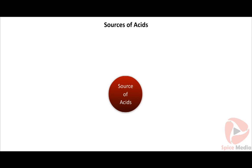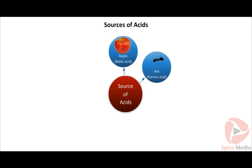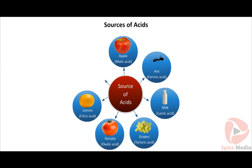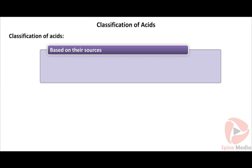The sources of acids are: apple contains malic acid, ant contains formic acid, milk contains lactic acid, grape contains tartaric acid, tomato contains oxalic acid, lemon contains citric acid, and vinegar contains acetic acid. Acids are classified based on their sources, basicity, ionization, and concentration. Based on sources, acids are organic acid and inorganic acid. Based on basicity, acids are monobasic acid, dibasic acid, and tribasic acid.